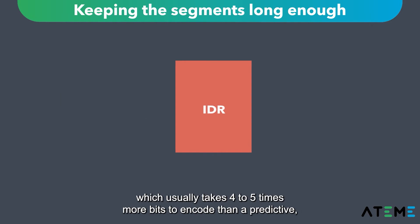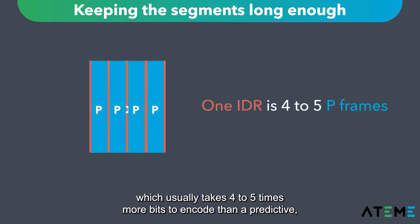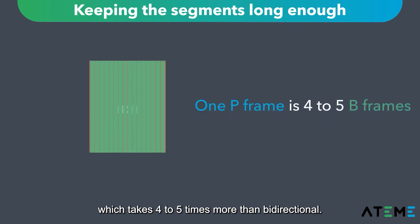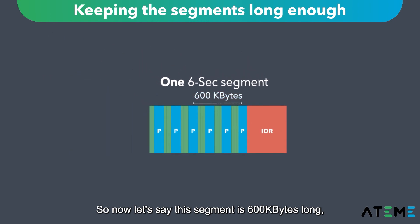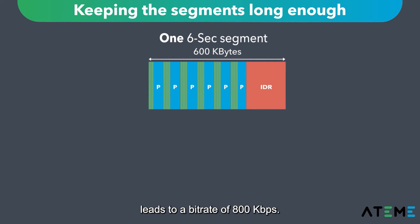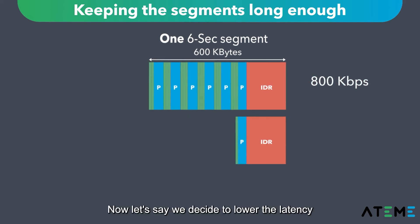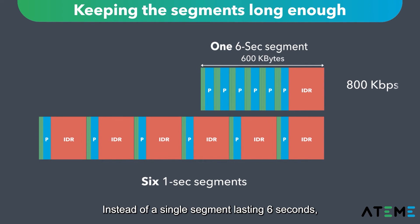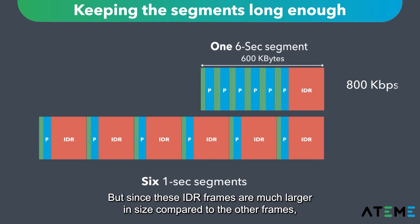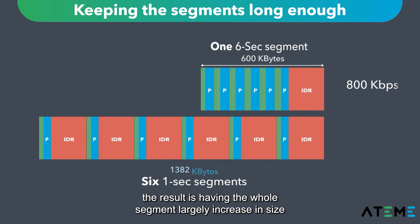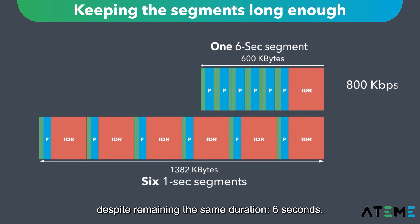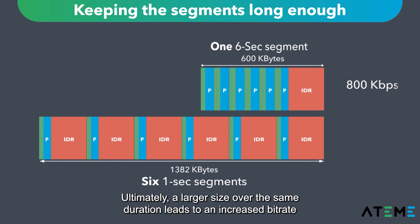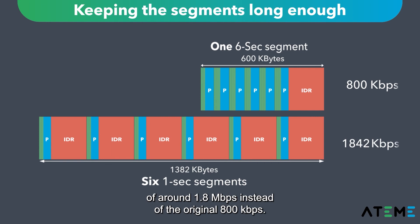This segment starts with an IDR frame, which usually takes four to five times more bits to encode than a predictive frame, which in turn takes four to five times more bits than a bidirectional frame. Now let's say this segment is 600 kilobytes long — 600 kilobytes over six seconds leads to a bitrate of 800 kilobytes per second. Now let's say we decide to lower the latency by lowering the segment duration to one second. Instead of a single segment lasting six seconds, we now need to insert one IDR frame every second. Since these IDR frames are much larger in size compared to the other frames, the result is the whole segment largely increasing in size despite remaining the same six-second duration. Ultimately, a larger size over the same duration leads to an increased bitrate of around 1.8 megabits per second instead of the original 800 kilobytes per second.